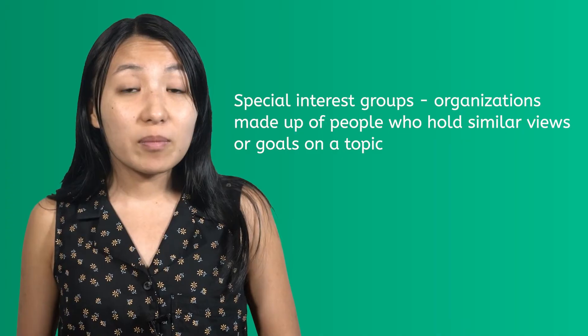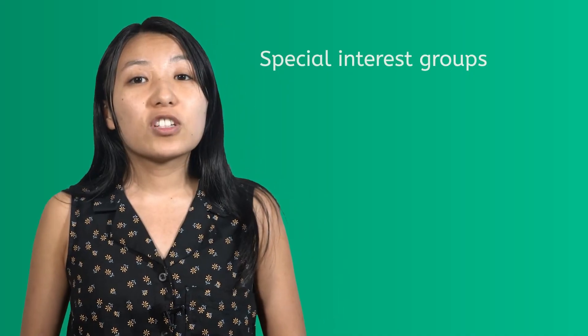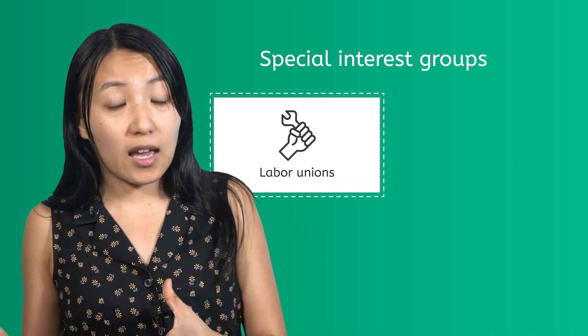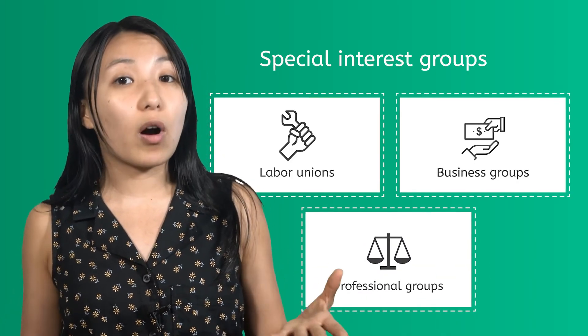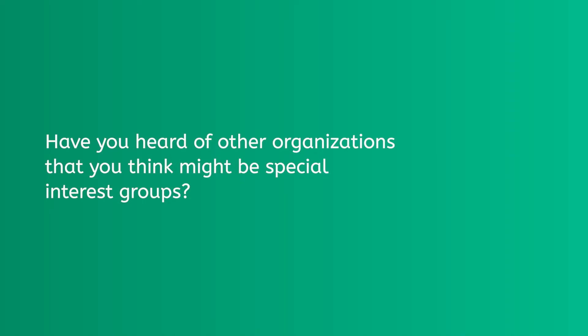A final type of organization for lobbying is called special interest groups — organizations made up of people who hold similar views or goals on a topic. Groups like this advocate for their special interests, which also forms a base of support for both political candidates and current and potential legislation. Special interest groups can include organizations such as labor unions and business groups, but also professional groups such as the American Bar Association, whose membership includes lawyers. Other special interest groups include diverse organizations such as AARP — the American Association for Retired Persons — MADD, or Mothers Against Drunk Driving, and the Sierra Club, an environmental organization with chapters in all 50 states. Have you heard of other organizations that you think might be a special interest group? Pause and write down your answer in your PDF.